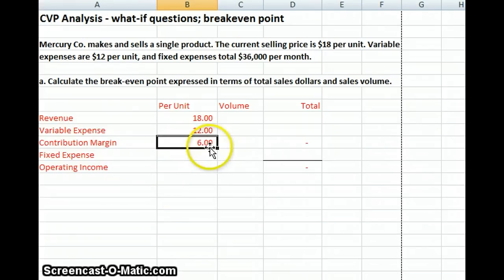In this particular problem, we have a company that makes and sells a single product. The current selling price is $18 per unit. Variable expenses are $12 per unit, and fixed expenses total $36,000 per month. We start off with revenue of $18 per unit. We have variable expenses of $12. Our contribution margin is $6. So for every item that we sell, we have $6 that can go towards covering our fixed expenses.